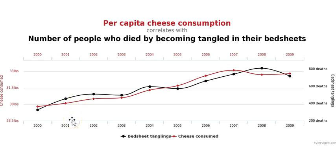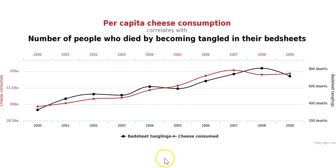A correlation is a relationship between two variables, but it does not mean that one caused the other. Sometimes companies or medicines will show you a relationship between two things that does not mean one caused the other. There could perhaps be some indirect connection — maybe consuming more cheese makes you weigh more, which might increase the risk — but you would have to do a lot of research to show causation.